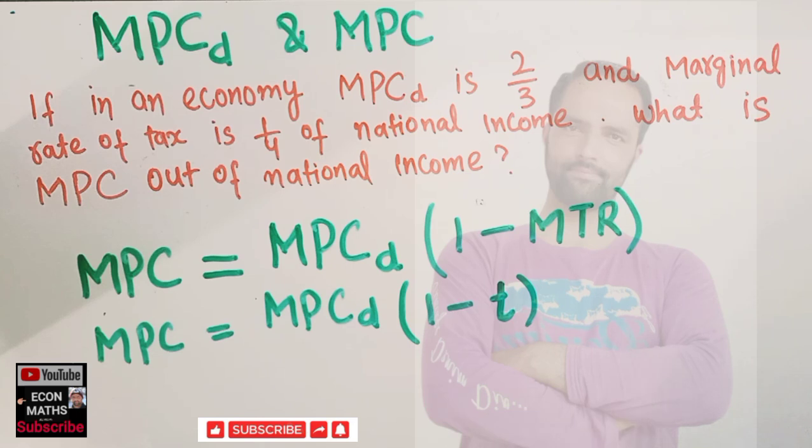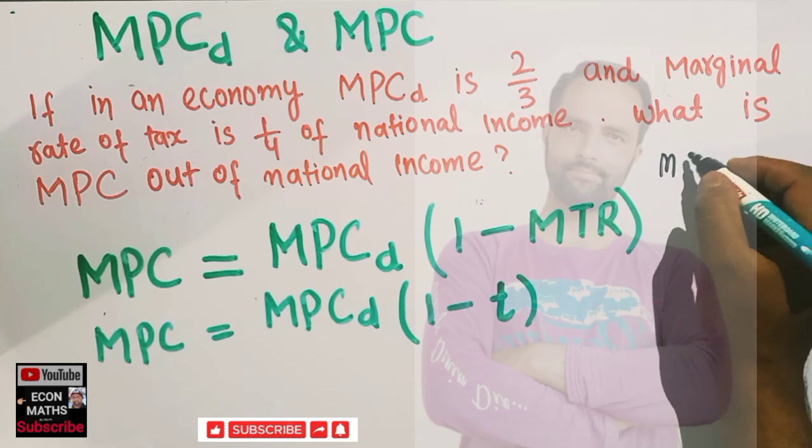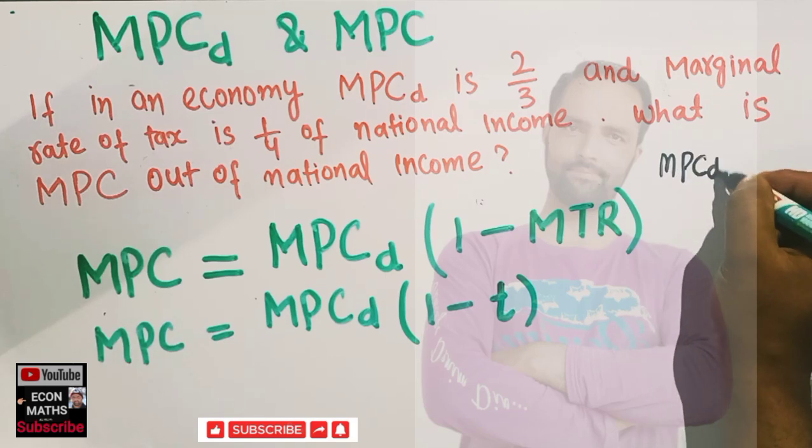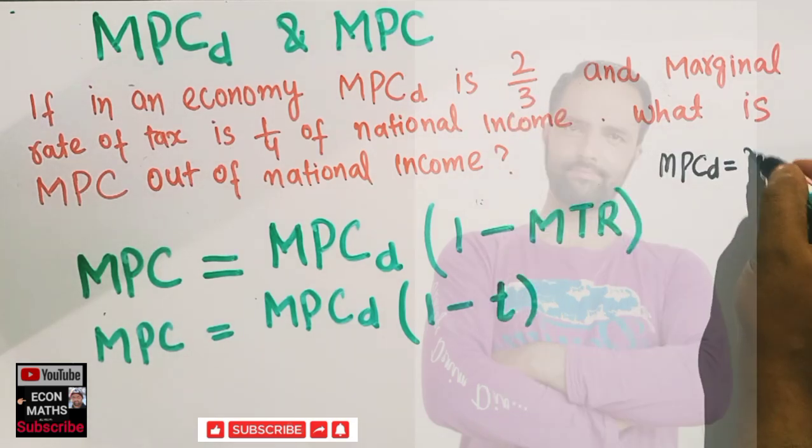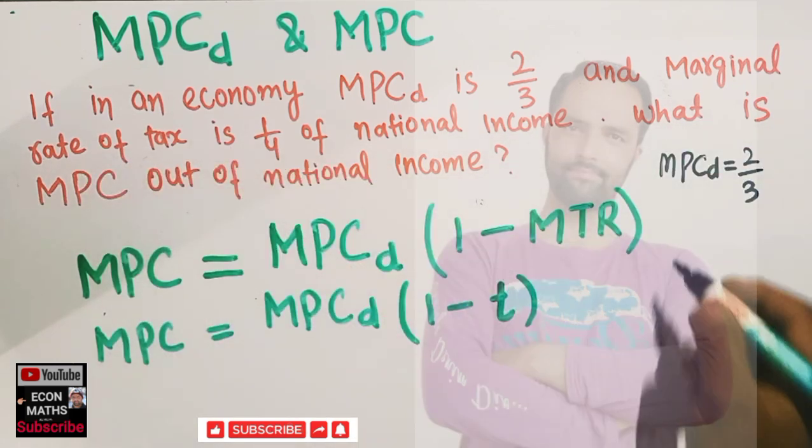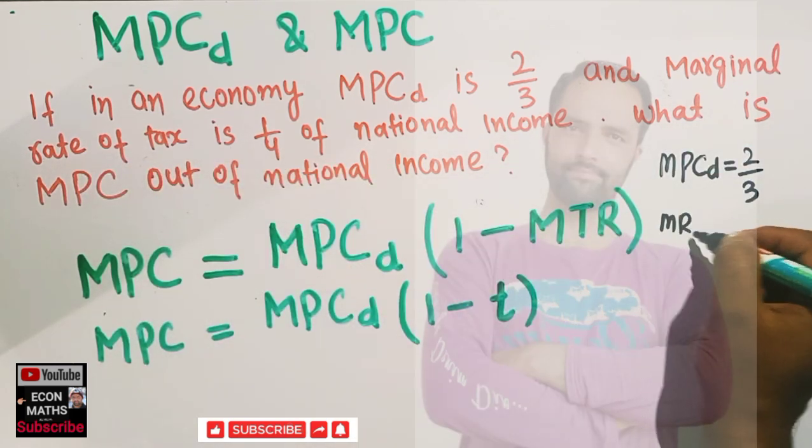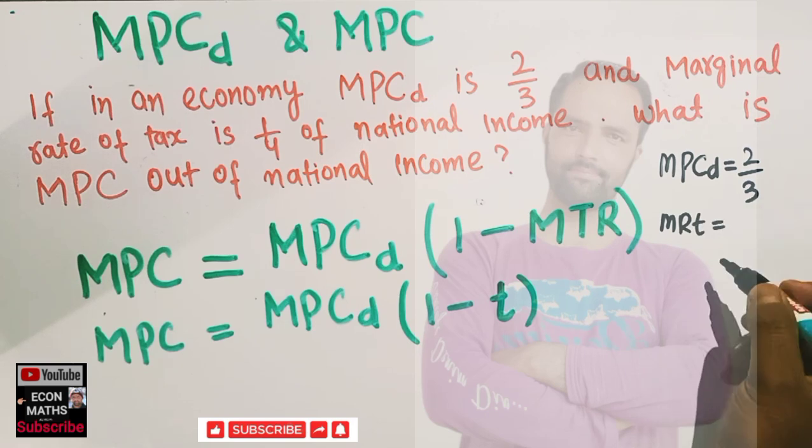So what we are being given here: MPCd out of disposable income is 2/3, marginal rate of tax (MTR or t) equals 1/4. Then our MPC is simply equal to: MPCd is 2/3, so we have (1